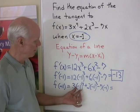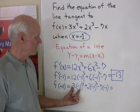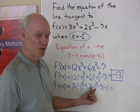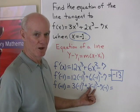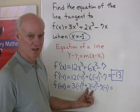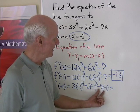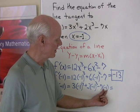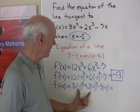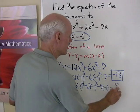So what do we have here? Negative 1 to the 4th is positive 1, times 3 is 3. Negative 1 cubed is negative 1, times 2 is negative 2. So 3 plus negative 2 is going to be 1. And then here I have negative 7 times negative 1, that's positive 7. Plus 1 is going to be positive 8.